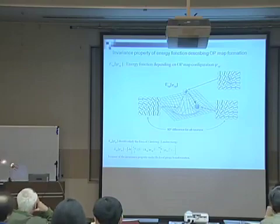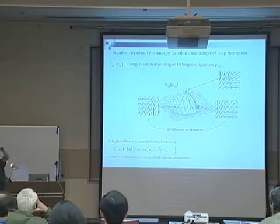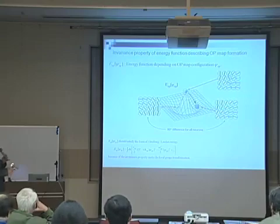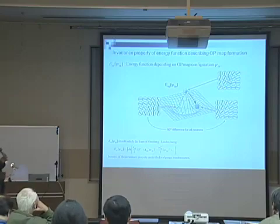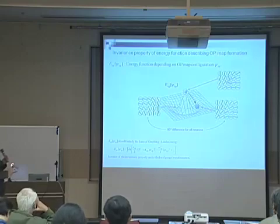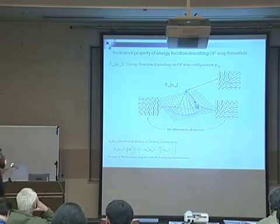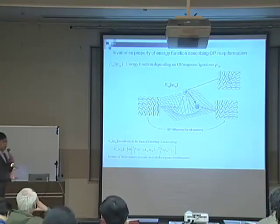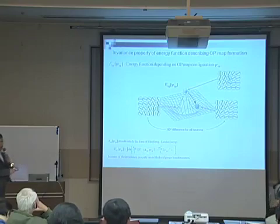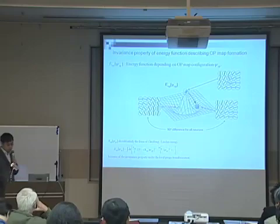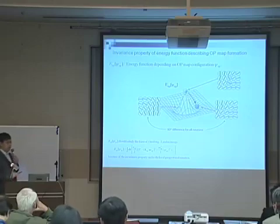The energy function which describes OP map formation will generate a low value for configurations with continuity. And the energy function should generate the same value for configurations in which the neurons have the same difference in preferred angles. That is, the energy function should be invariant under the global rotation transform. Considering the invariance under the local rotation transform, the energy function should be described by this general form, the Ginzburg-Landau energy function. This energy function is the necessary condition of well-defined models of visual map formation.